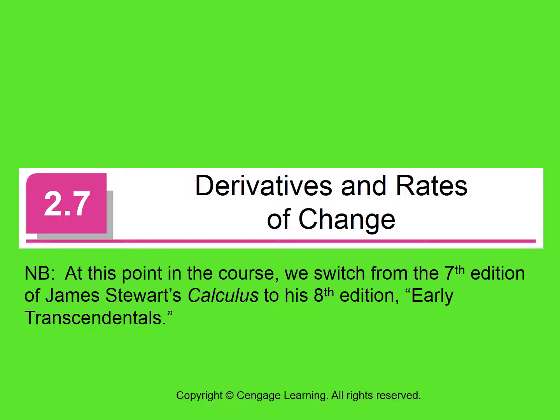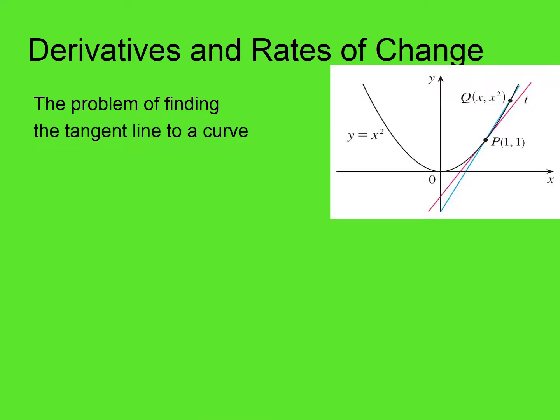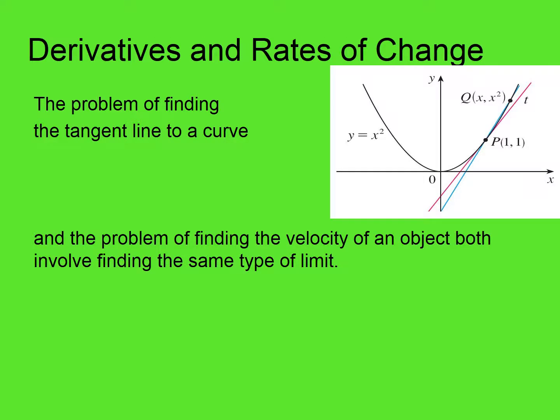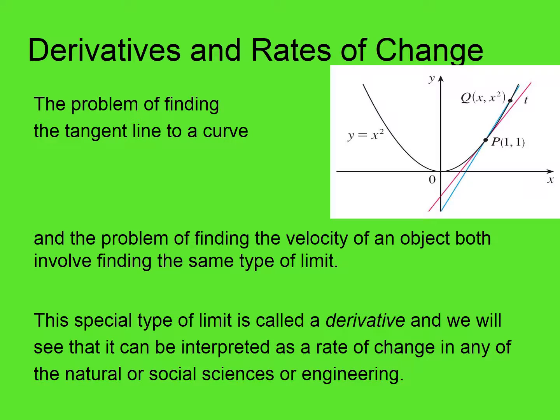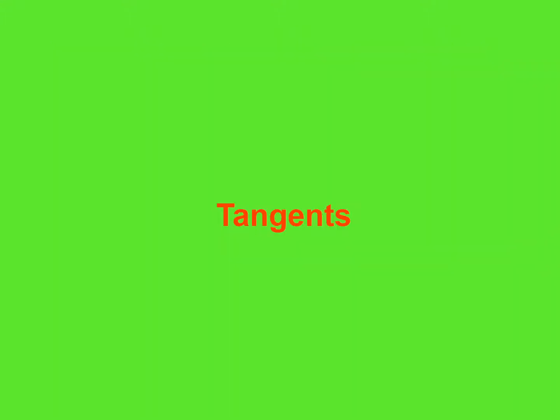The next section is derivatives and rates of change. We have talked about the tangent problem — the problem of finding the tangent line to a curve — and the problem of finding the velocity of an object. Both involve finding the same type of limit. This special type of limit is called a derivative, and it can be interpreted as a rate of change in any of the natural or social sciences or engineering.